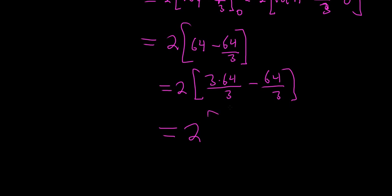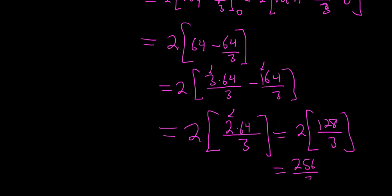This is 2 times, now 3 times 64 minus 1 times 64 is 2 times 64. So it's 3 of these minus 1 of these gives you 2 of those. This is 2 times 128 over 3, and 2 times 128 is 256 over 3. I'm pretty sure that's the correct answer. Pretty cool problem, I hope this video has been helpful, take care.